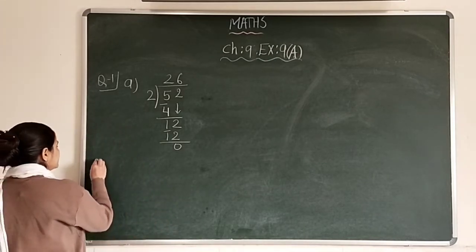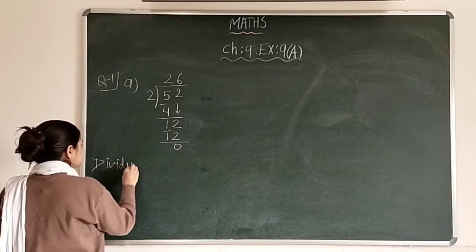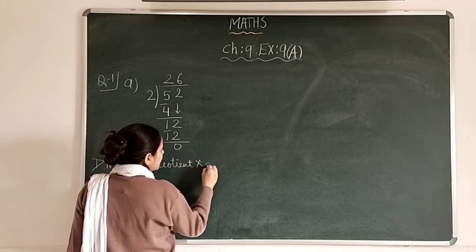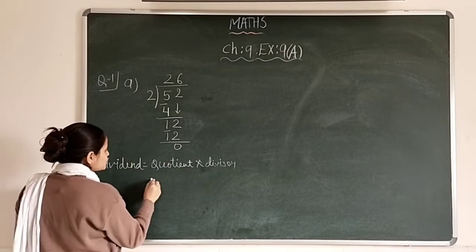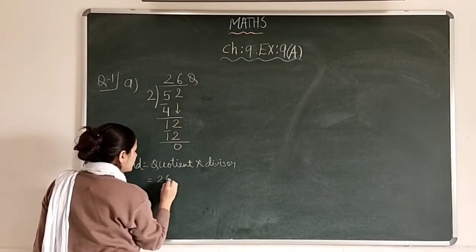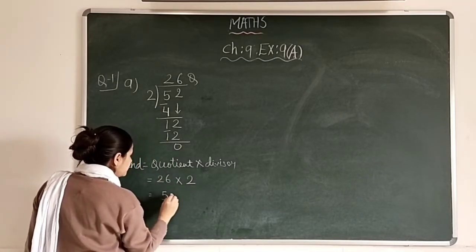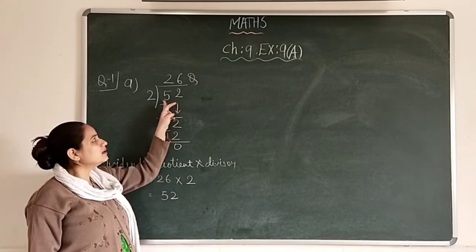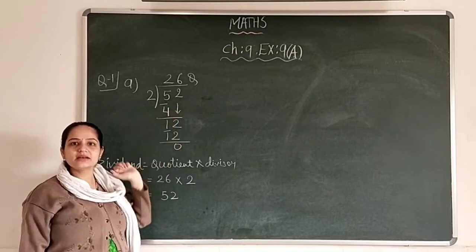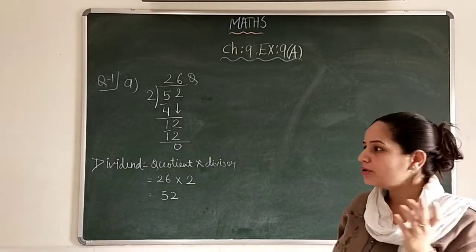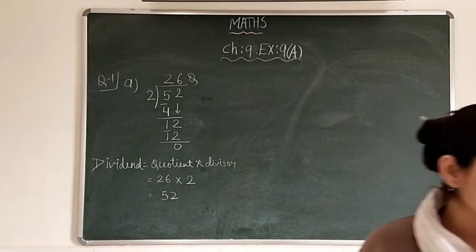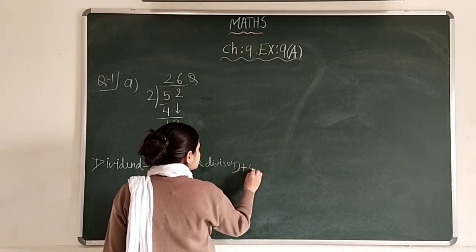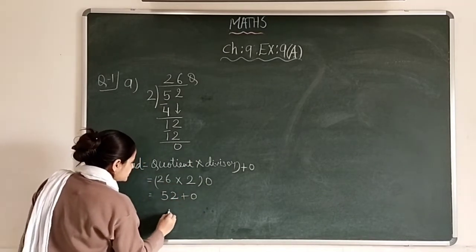Now we will check whether the division is correct: dividend equals quotient multiplied by divisor plus remainder. The quotient obtained is 26 and the divisor is 2. 26 times 2 is 52. We had 52 as dividend when we started. 52 plus 0 is 52, so our answer is verified.